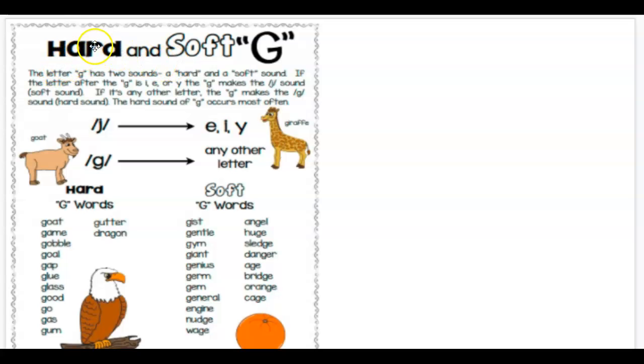Our hard G is the one we learned at the beginning of the year. That is the G-G, like goat, game, gobble, gap, glue.